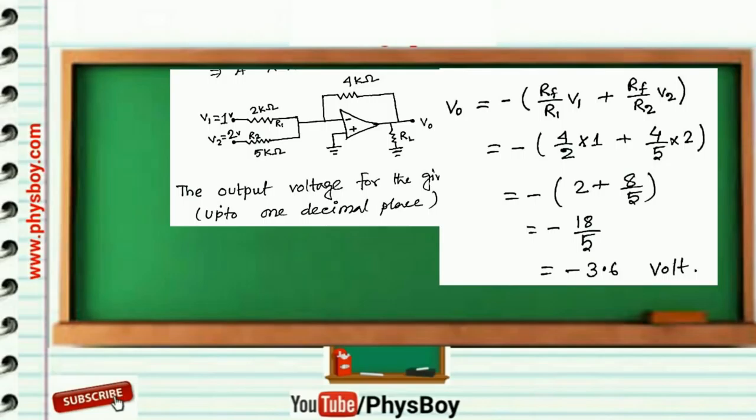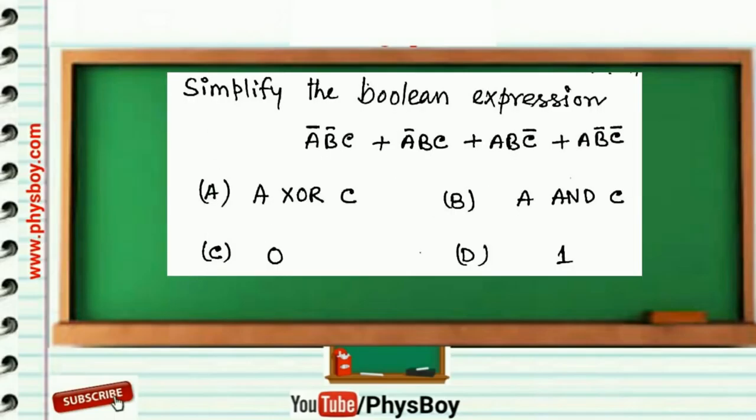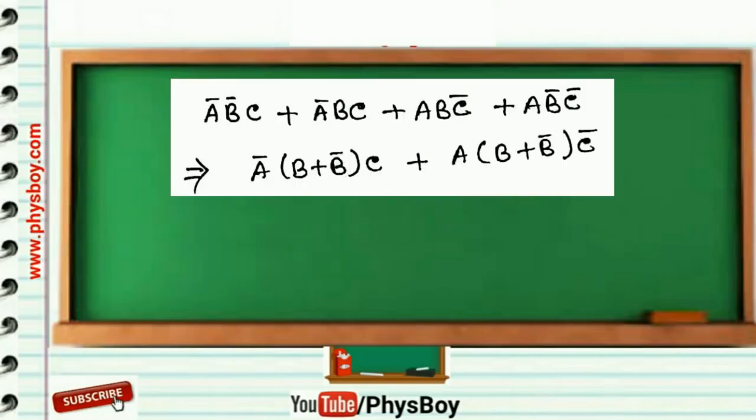Next question is simplify this Boolean expression. The first two terms can be rearranged as A bar B plus B bar times C, and the fourth term can also be rearranged as A times B plus B bar times C bar.